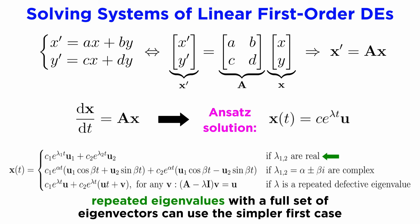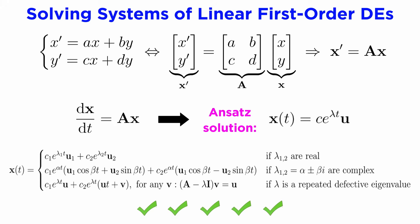Note that if we find that we have repeated eigenvalues, but that they still have a full set of eigenvectors, we don't need to use this method, and we can instead still use the simpler first case. So that's how to solve the general form of a homogenous linear system of differential equations, x prime equals Ax, where x is a vector and A is a matrix.